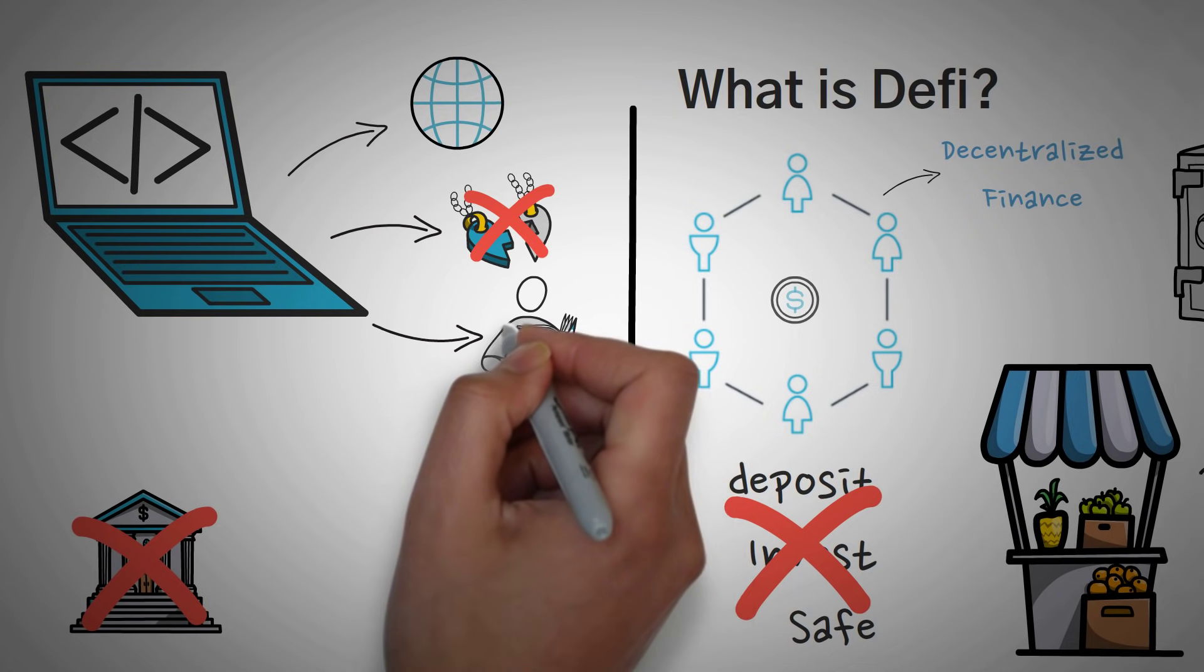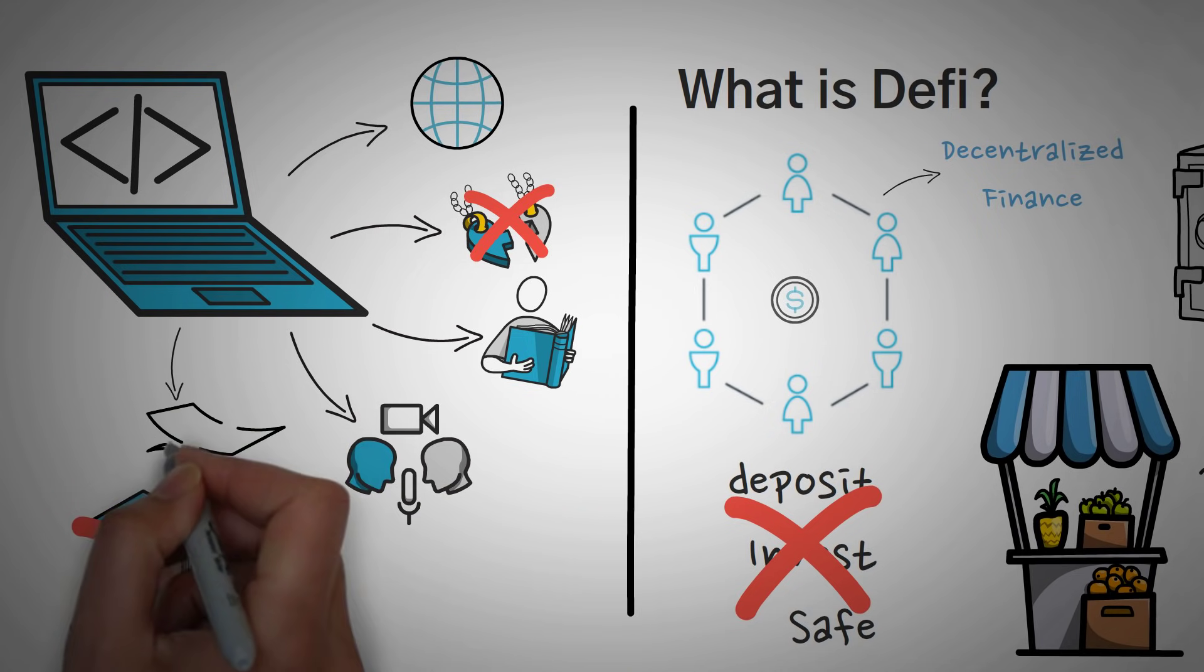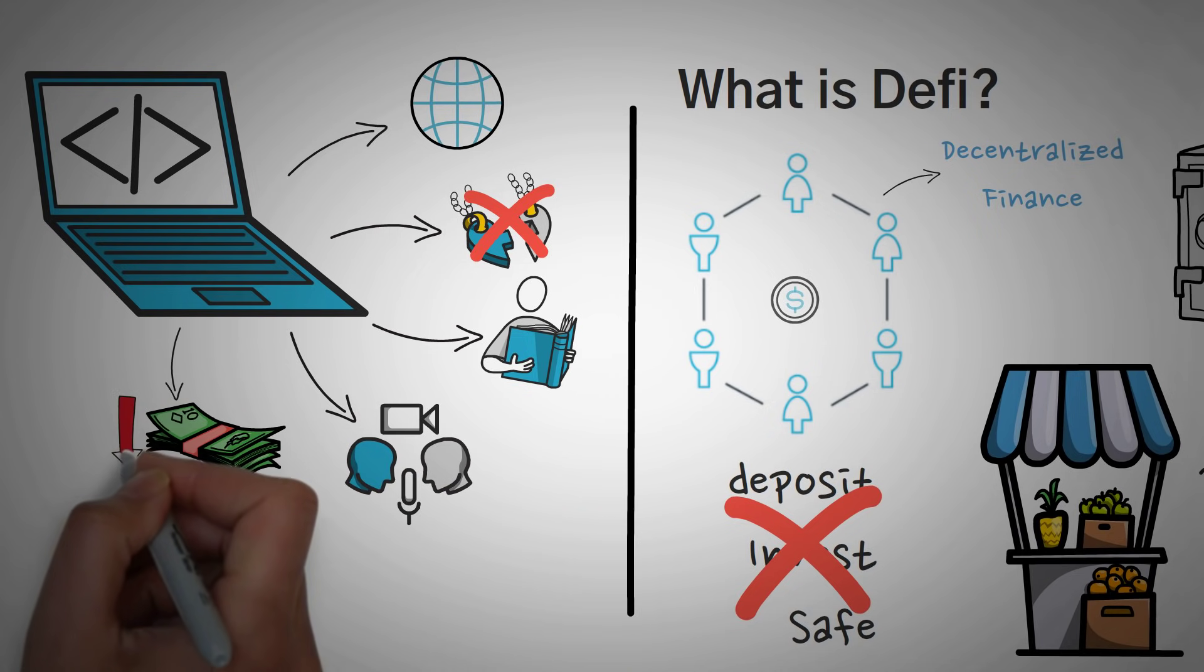If you wanted to, you could read through it and verify that it's not going to scam you. They are also censorship resistant, and lastly, they are much, much cheaper than traditional centralized finance.